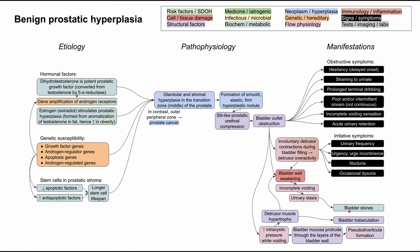Bladder stones are one possible manifestation of BPH. Urinary retention also results from incomplete voiding and urinary stasis. That stasis also predisposes to infection — in this case, a urinary tract infection. This is one of the more common ways men get UTIs, since men are otherwise much less likely to get UTIs than women. Urinary tract infections can present with urinary frequency, dysuria, and incomplete voiding sensation, potentially reinforcing the obstructive or irritative symptoms of BPH.